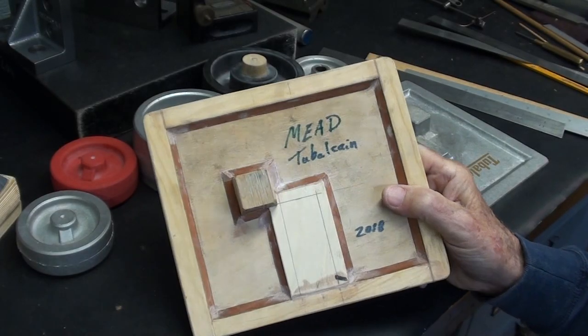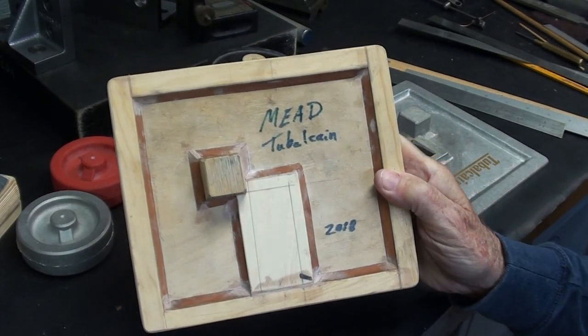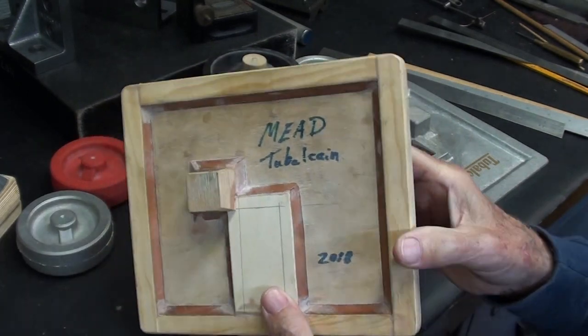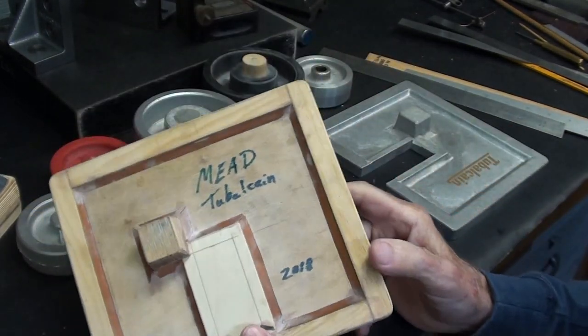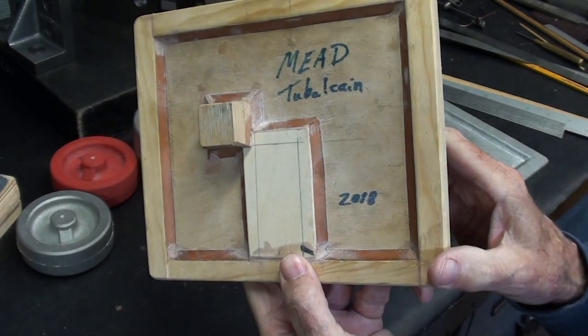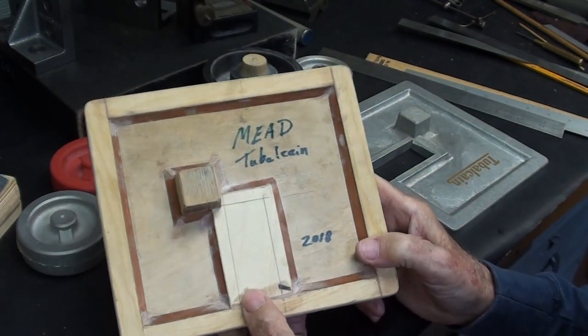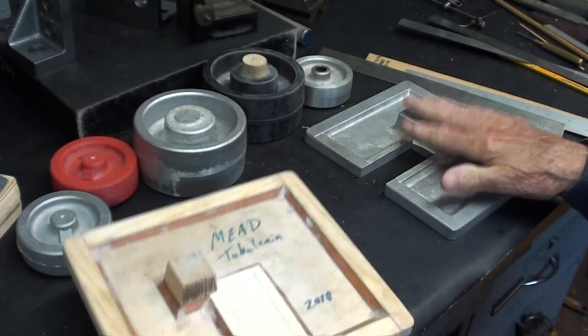Okay, here's a wooden pattern that I made a few years ago, 2018 to be exact. This is a little work table for that mead sander that I rebuilt and restored. So you might have watched that video. And this is the finished casting.